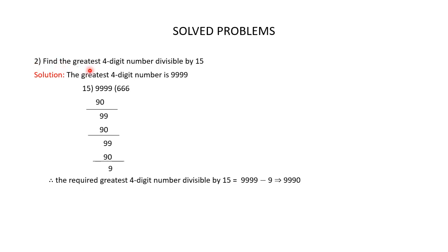Question 2: Find the greatest 4-digit number divisible by 15. The greatest 4-digit number is 9999, but this number is not divisible exactly by 15. When you divide 9999 by 15, you get 9 as the remainder. To find the required greatest 4-digit number divisible by 15, subtract the remainder from 9999. So 9999 minus 9 gives 9990. 9990 is completely divisible by 15, so the required greatest 4-digit number divisible by 15 is 9990.